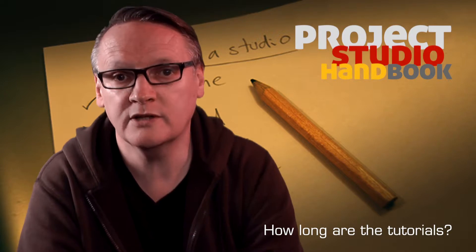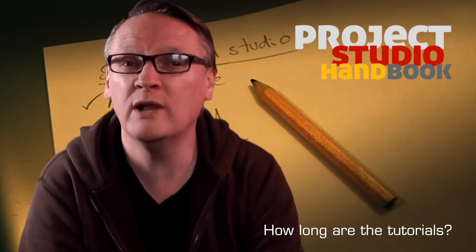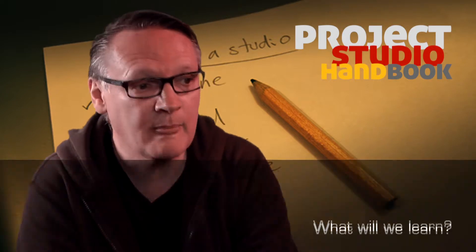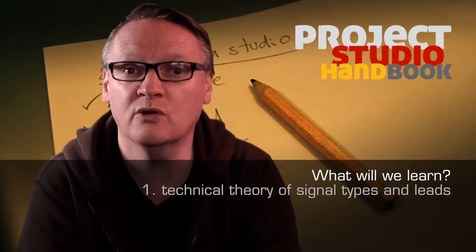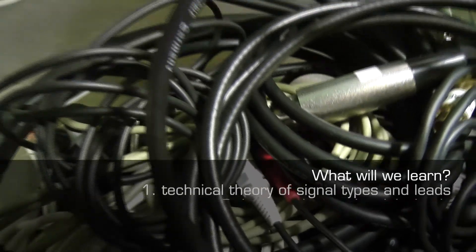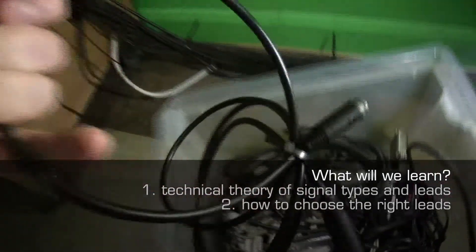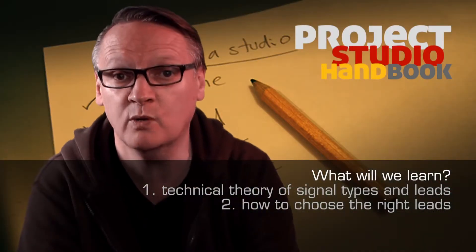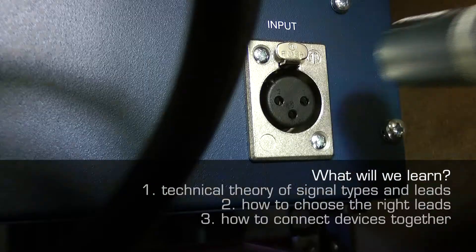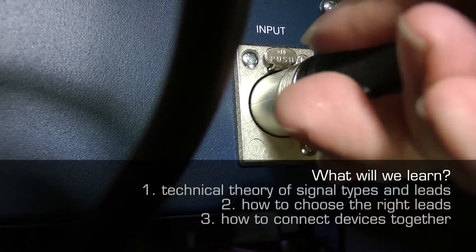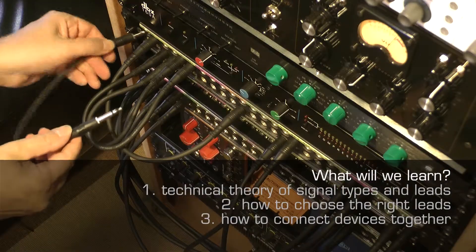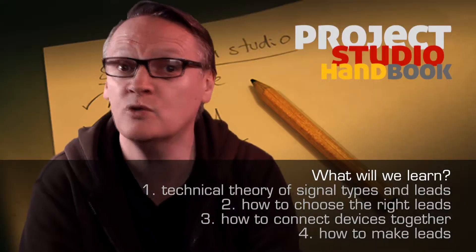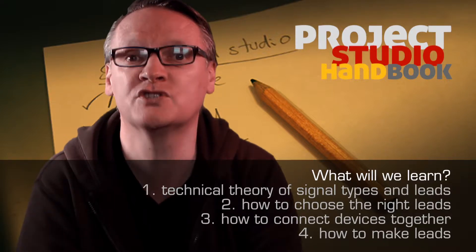Some of the tutorials in this series are short, like this one, whilst others require more lengthy explanations to give essential information without which you'd be in trouble. During these tutorials we will learn the technical types of interconnects and signals and the leads. We'll learn how to choose the right lead for a given job so you don't damage your equipment. We'll learn how to connect devices together in the correct order, so you don't damage your equipment, your ears or your monitor speakers. And we'll also show you how to make leads — so a bit of soldering.